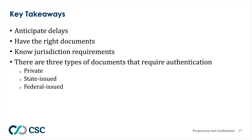Thank you very much, Rob and Sonia, for walking us through these steps with the legalization, authentication, and apostille process. Some real key takeaways: first, anticipate delays — take into account holidays in other countries and how they may affect embassy and consulate openings and hours. Make sure you have the right documents, as missing documents will delay your process. There are specific jurisdiction requirements depending on where you're dealing with. And remember, there are three types of documents that can need authentication: private, state-issued, and federal-issued — each with different processes.